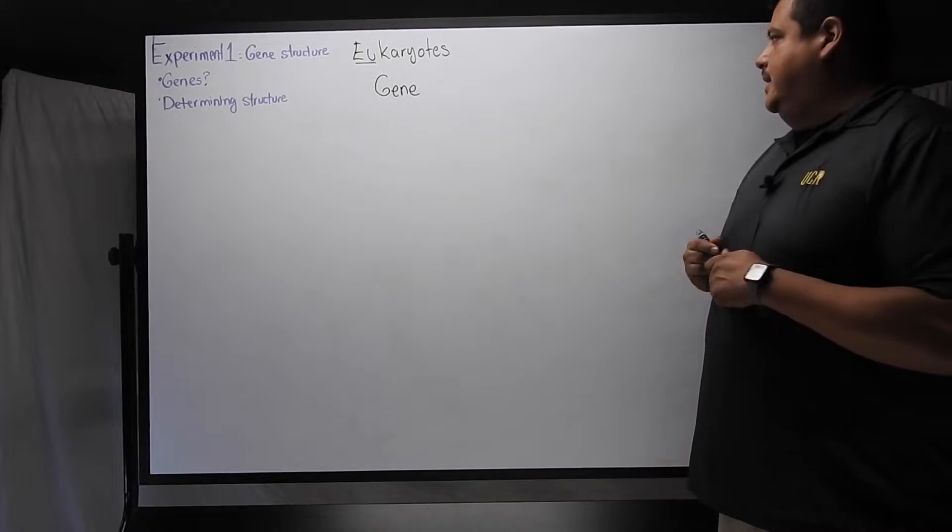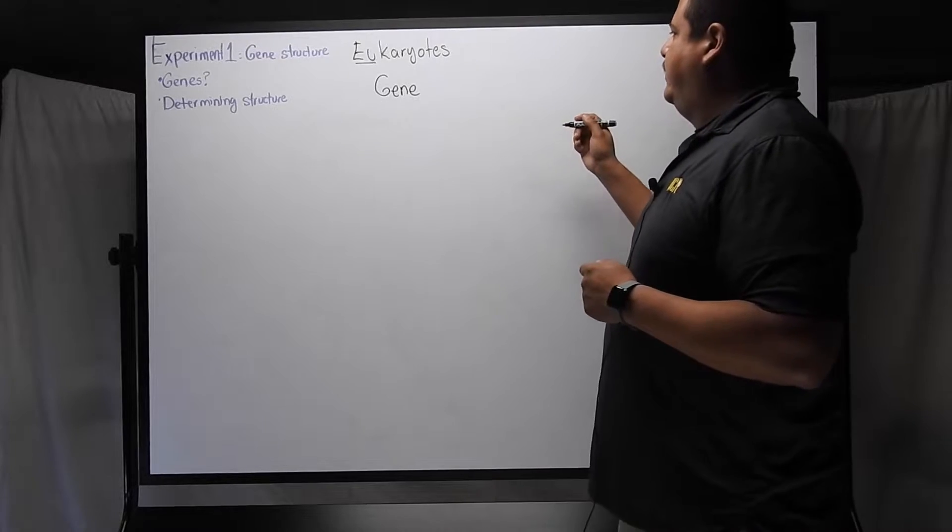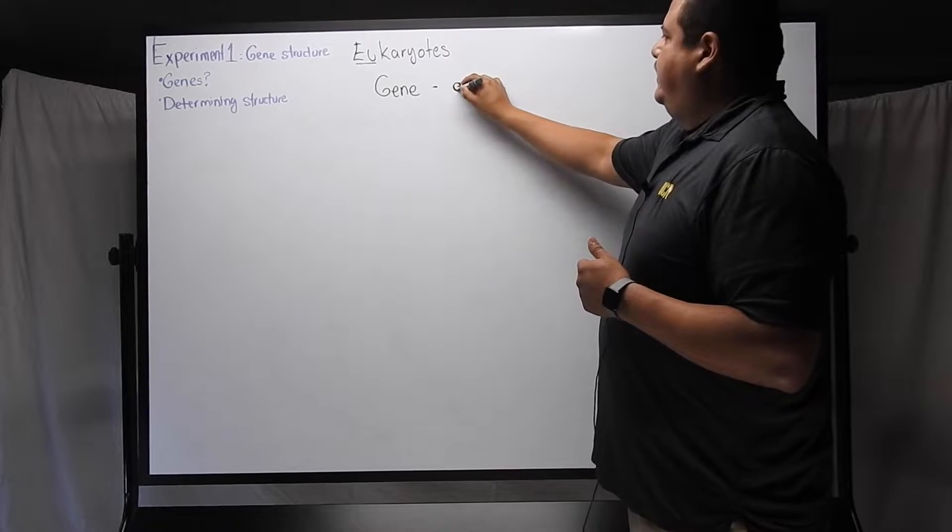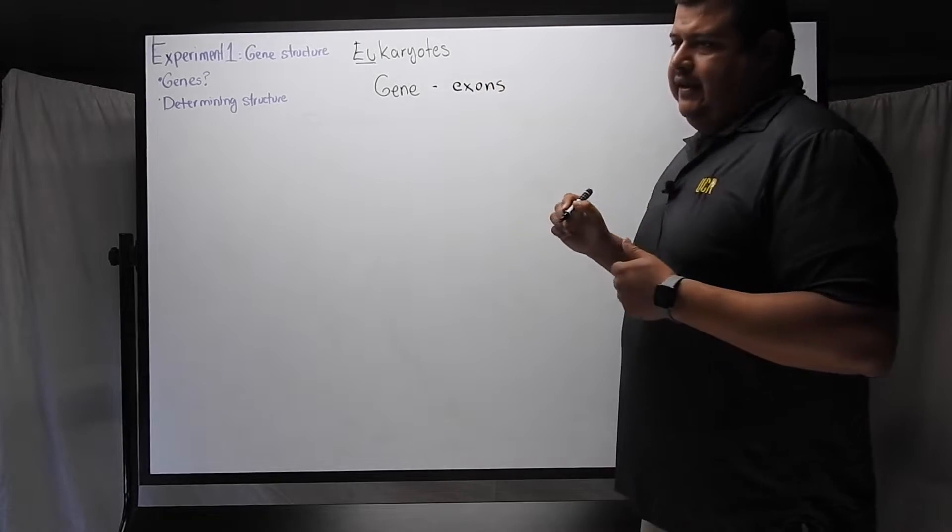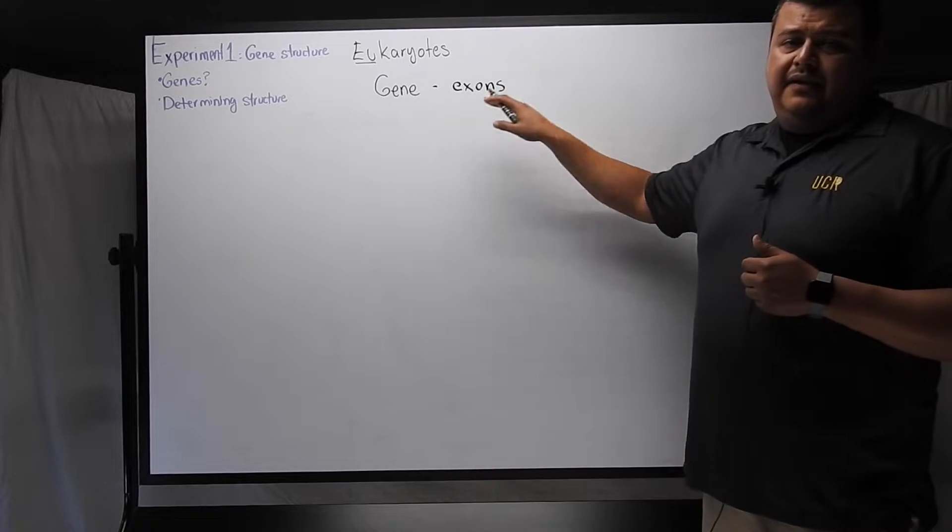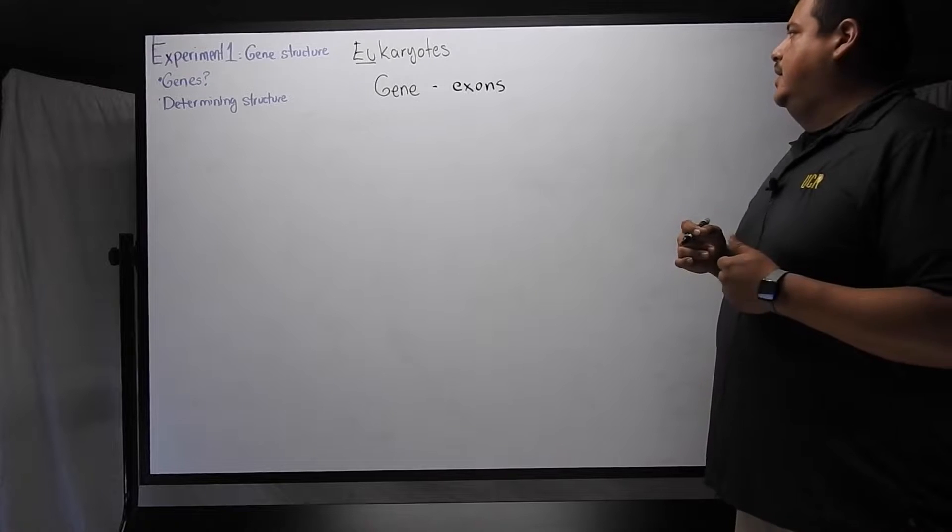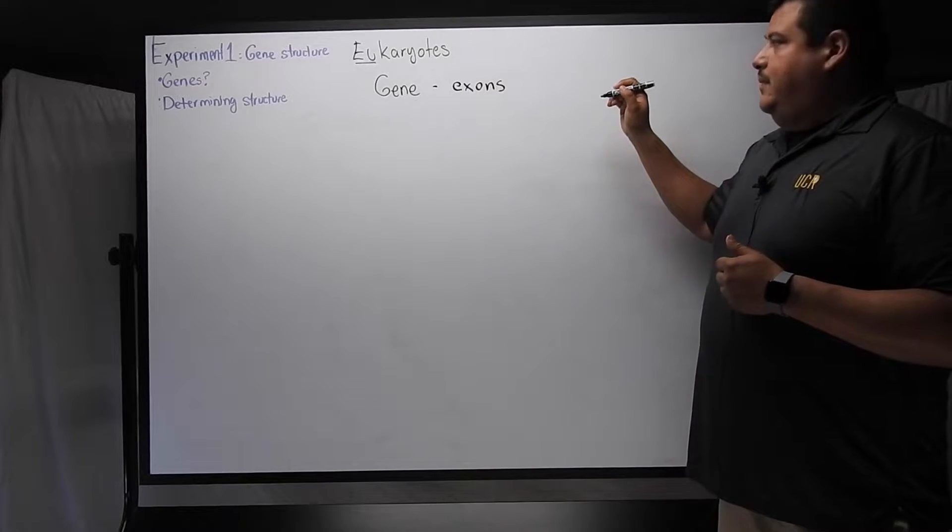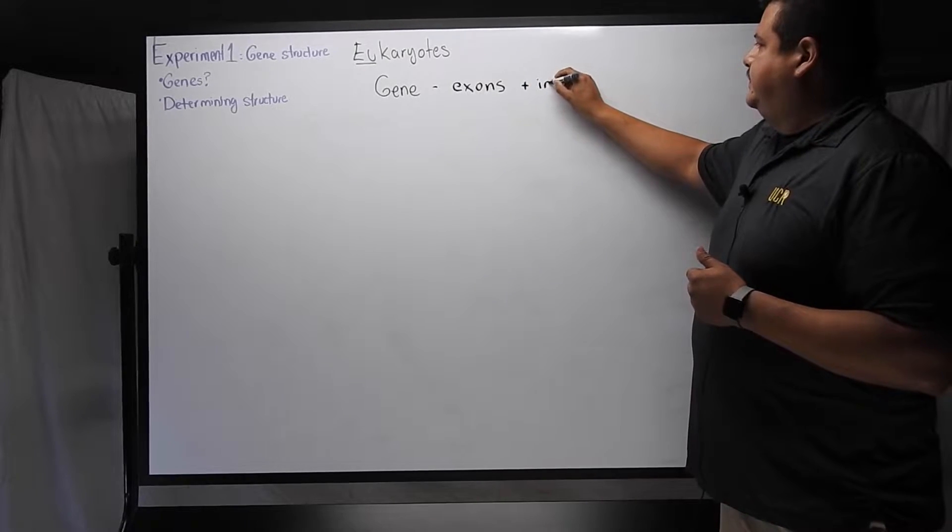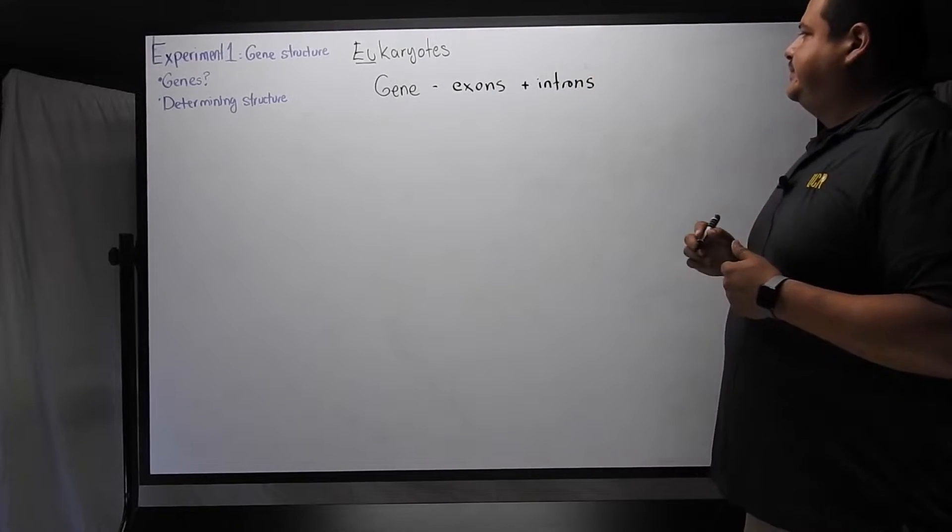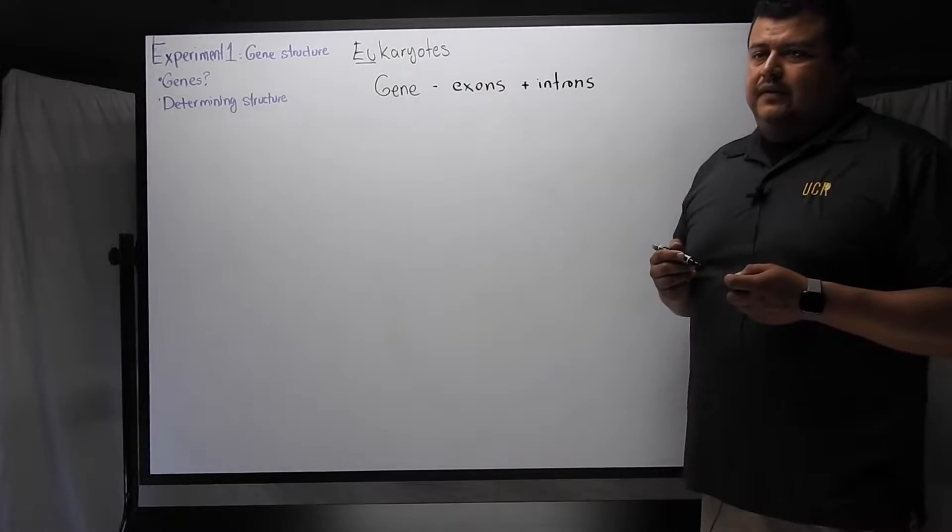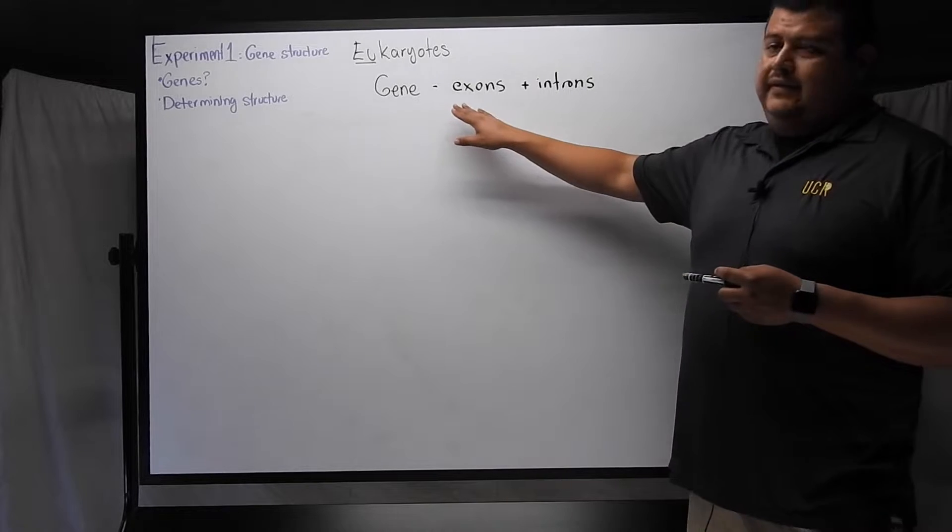We're going to limit the discussion for this class to genes that code for protein. And in the genome, that only accounts for a small percentage. Most of the genome is a large space of non-coding information that may have different functional aspects. But for genes in eukaryotes, they're organized where they themselves have coding areas.